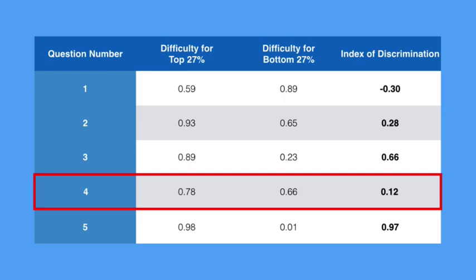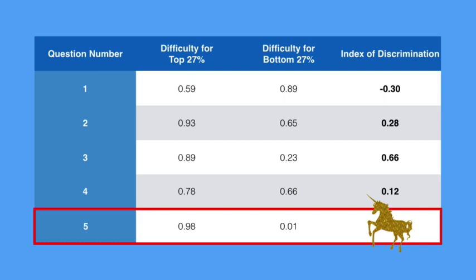Question four could be a lousy question as it's not telling us much between top and bottom performers, but this is okay if it's a mastery level question. Otherwise, we might want to look at it to see how many more we have just like this one and fix them if we can. Question number five is our golden unicorn — nearly perfectly discriminating — so catch it if you can.